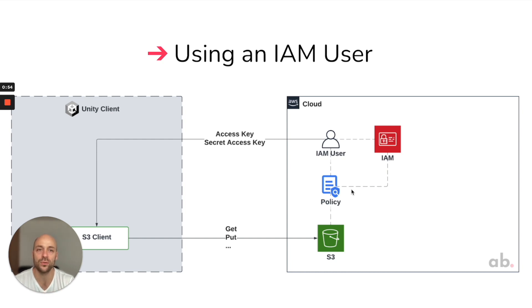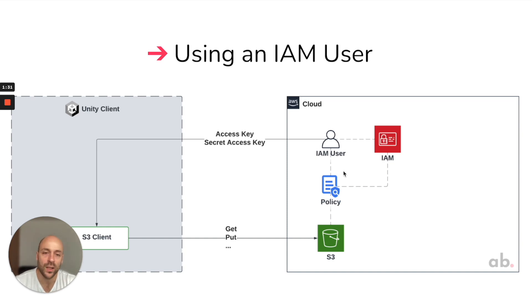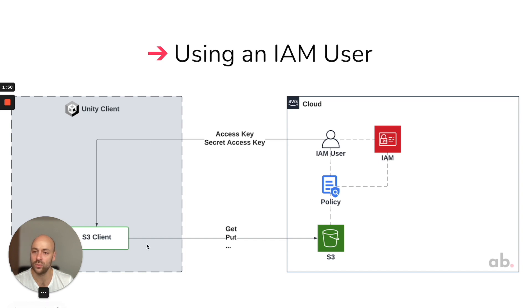Let's start with the first way: using an IAM user. Suppose you want to allow a specific user to upload files to one of your S3 buckets, but you want to keep it simple without implementing a sign-up or login flow — you just want to give programmatic access. In this case, using an IAM user is a perfect fit. You create an IAM user, attach a policy allowing uploads to that specific S3 bucket, and in Unity you just need the access key and secret access key to build your S3 client.